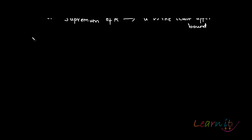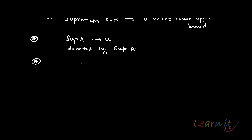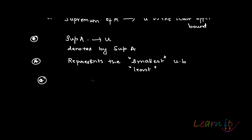So supremum of A means that u is the least upper bound. You can have a lot of upper bounds, but u is the least upper bound. Supremum of A will be denoted as sup A. It represents the smallest or least upper bound. Number three: it has to be unique — this is a very important property.